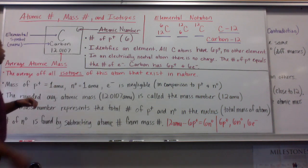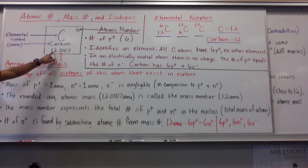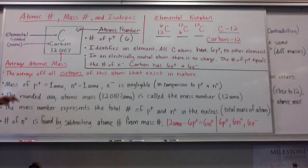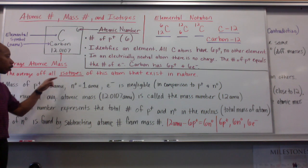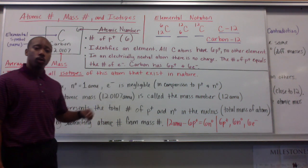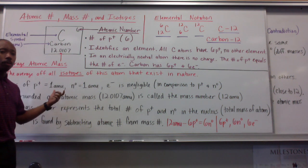Now, another number is this number here, 12.0107. This is the average atomic mass. Now, the average atomic mass is the average of all isotopes of this atom that exists in nature. We'll talk about what isotopes are in just a moment.